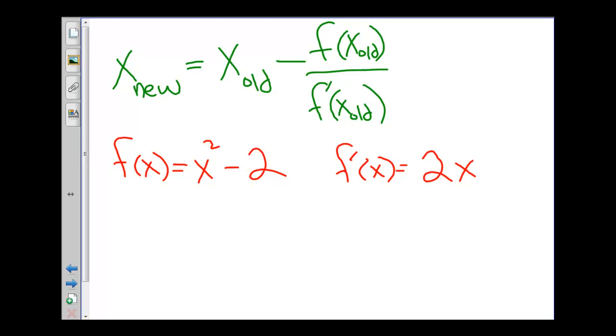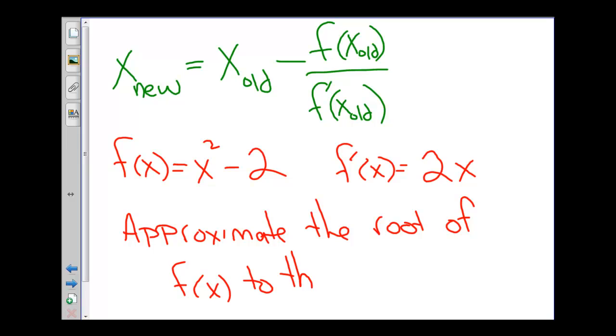So let's go ahead and approximate the root of this function to, let's say, 3 decimal places. So we're going to use this function, we're going to start with a guess, and what we're going to do is we're going to try to get a value that is as close to this function's root as possible.